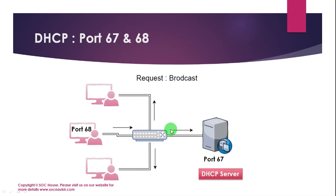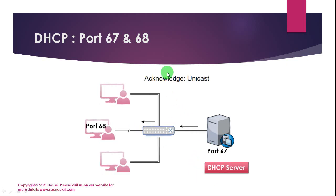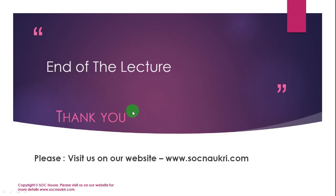Request is another broadcast message from the client machine to the server to request all the information in the offer packet. Acknowledgement is a unicast message from the server to the client to acknowledge all the information in the request. The system then gets the new IP address from the DHCP server.